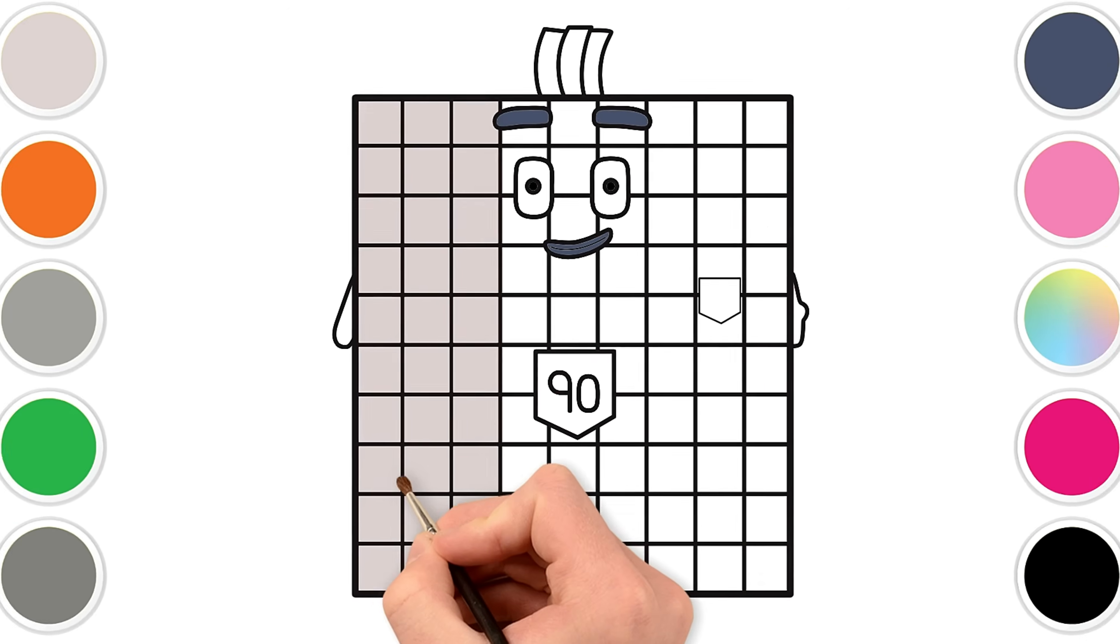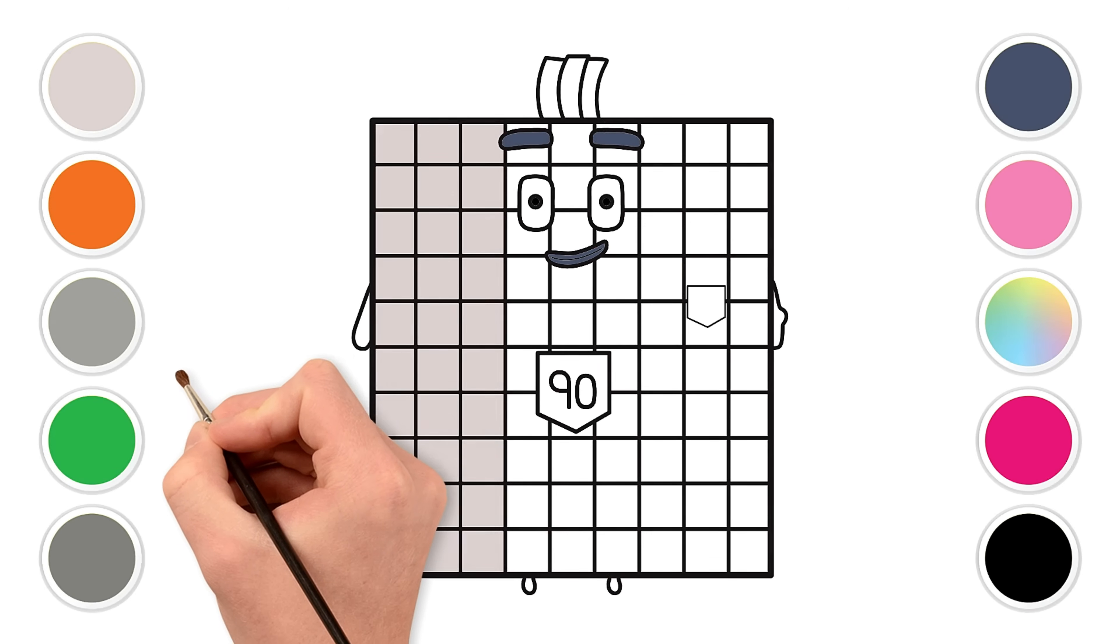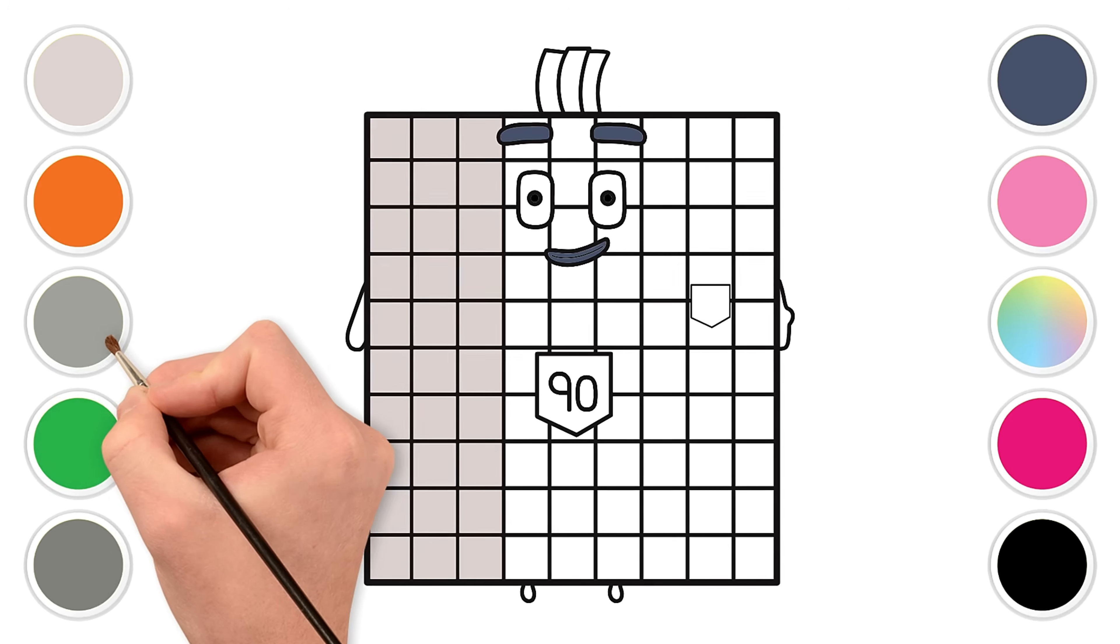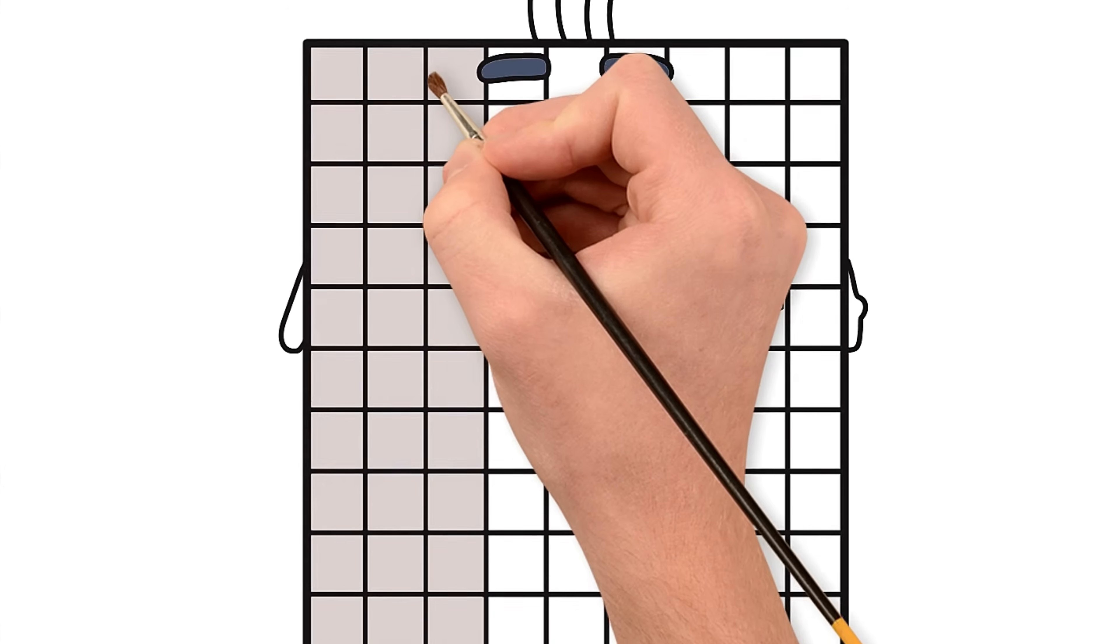Now color the next three columns with medium gray. M-E-D-I-U-M-G-R-A-Y. Medium gray.